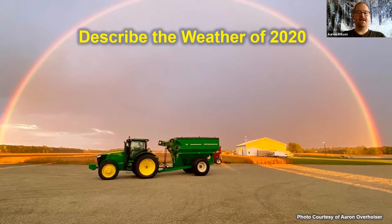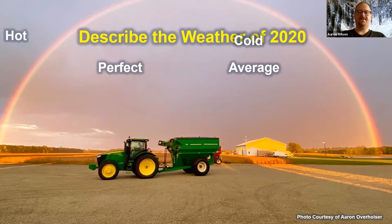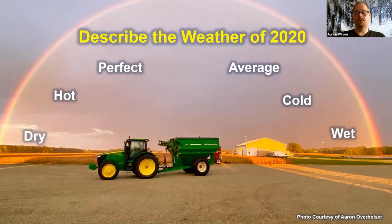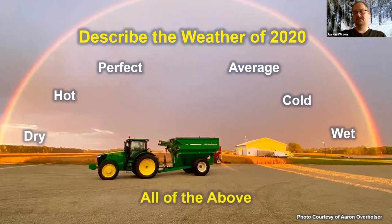If I were to ask you to describe the weather of 2020, I think I'd get a lot of different answers. Some would talk about a perfect or average season; some would remark it was hot or cold during different parts of the year. And dry and wet, certainly depending on where you are in Ohio. I would argue we've seen all of the above for 2020.